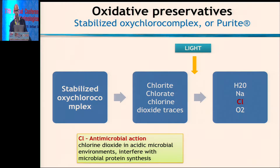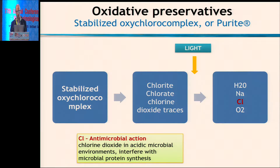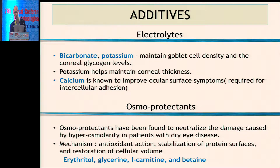SOC or purite, when it comes in contact with light, is broken down into water, sodium, chloride, and oxygen — that's why they're called disappearing preservatives. Sodium perborate, when it comes in contact with the aqueous environment, is broken down into water and hydrogen peroxide and oxygen. Hydrogen peroxide has antimicrobial properties, which helps to keep the drop sterile.